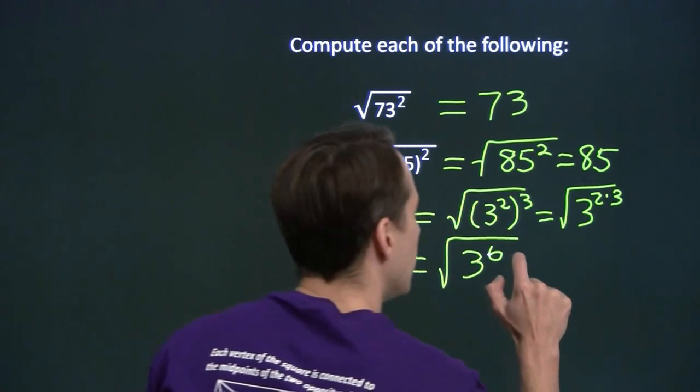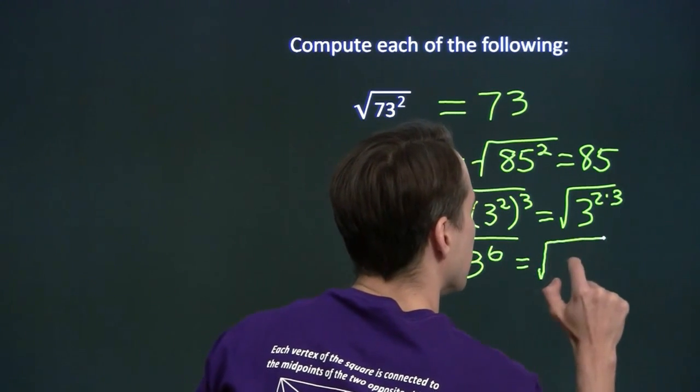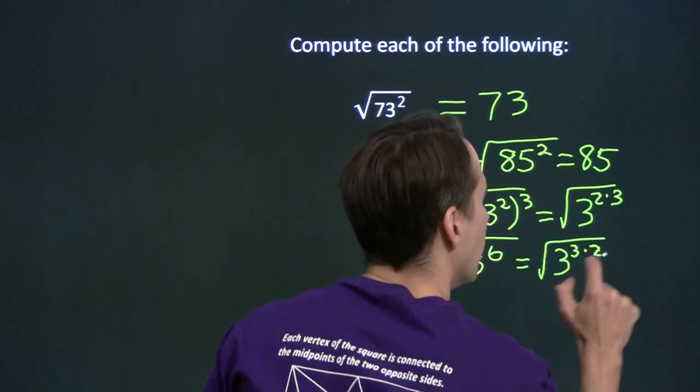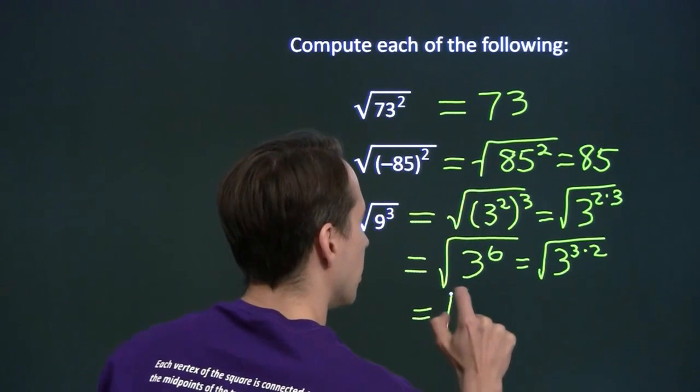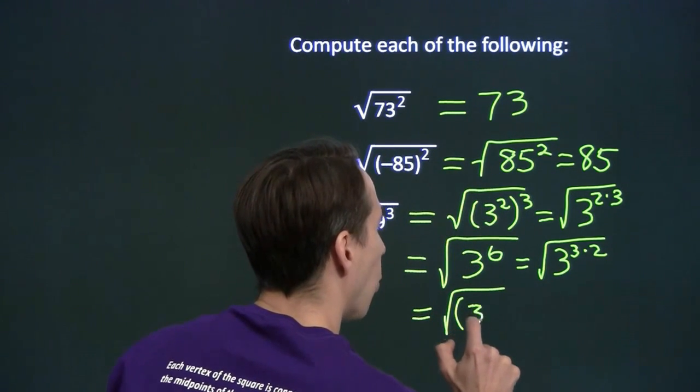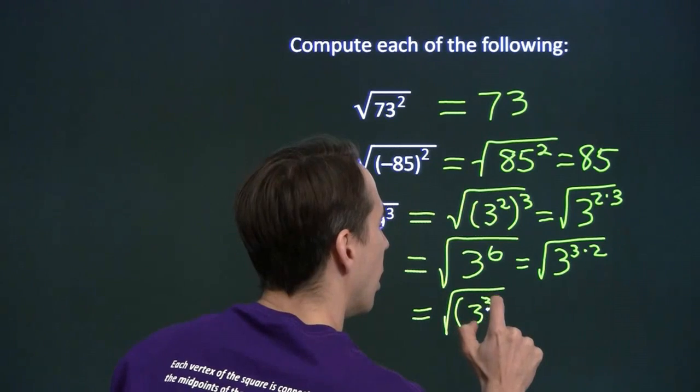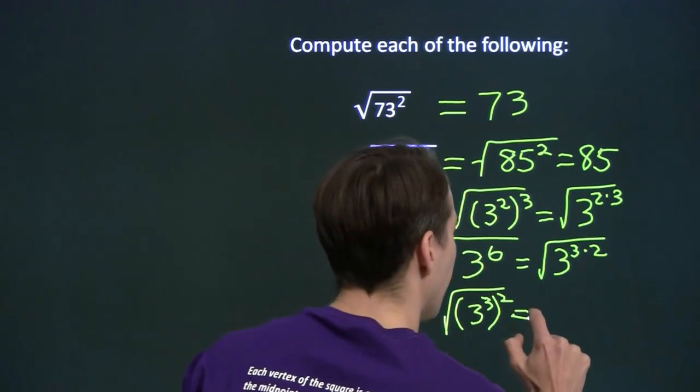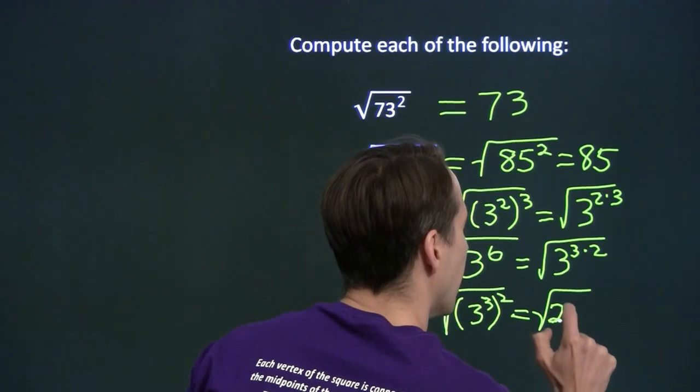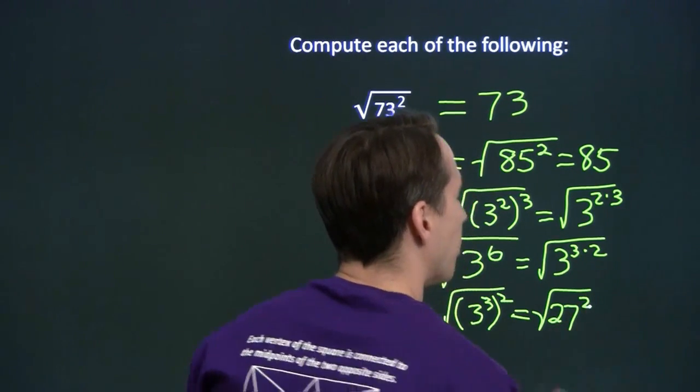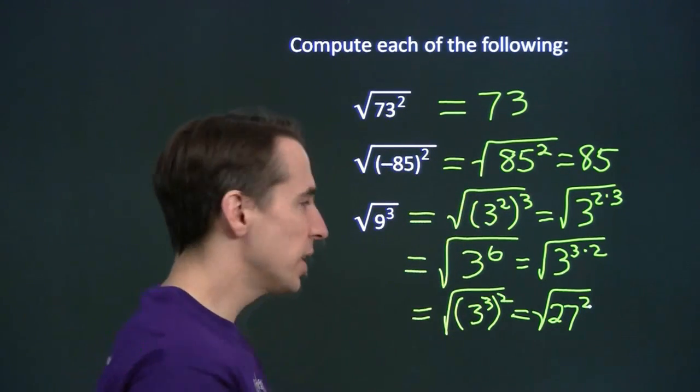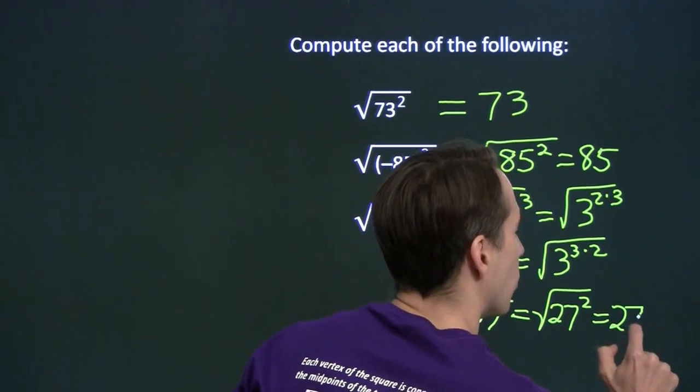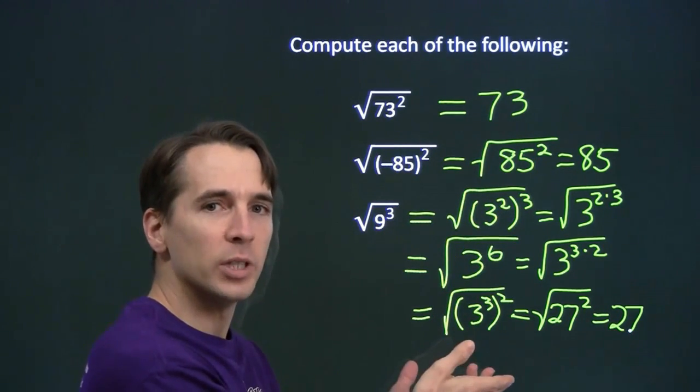Hey, we could use this again. We can turn this around. We can write this as 3 to the 3 times 2. In other words, this is the square of 3 cubed. 3 cubed is 27. And now we've written 9 cubed as a perfect square. 9 cubed is 27 squared. And the square root of 27 squared is 27. And we're done.